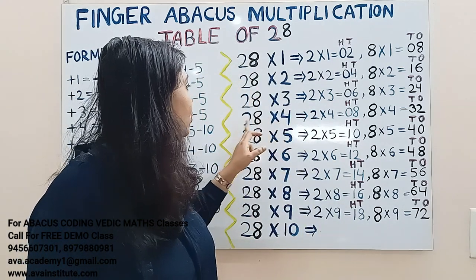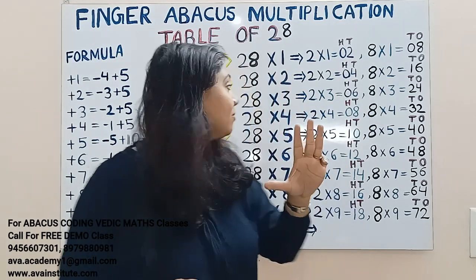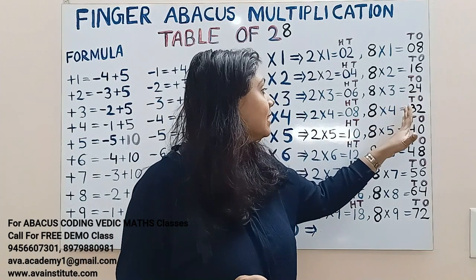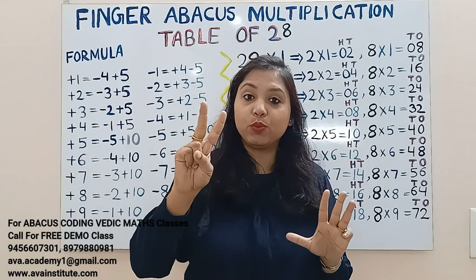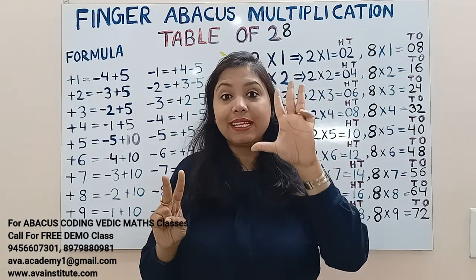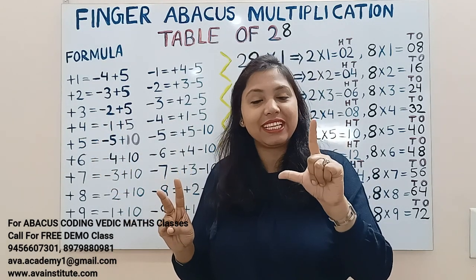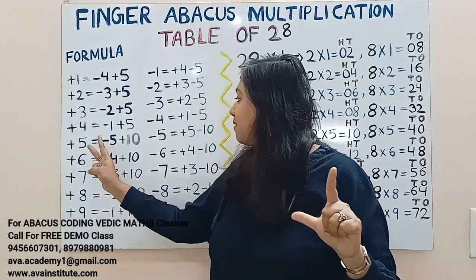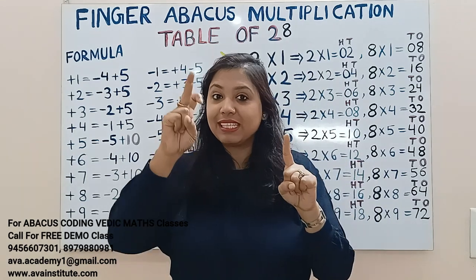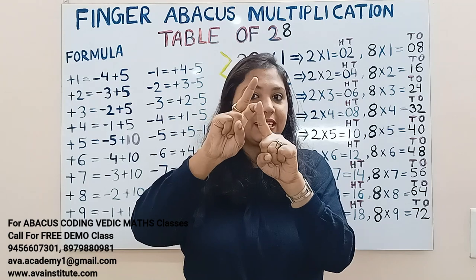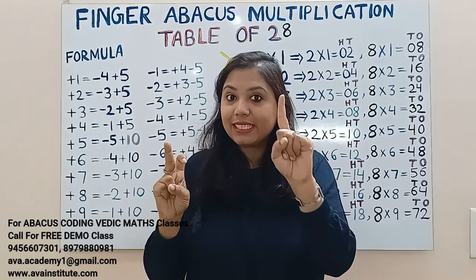Next, 28 fours: 2 fours are 8 — in hundreds: 0, in tens: 8. Now 8 fours are 32 — in tens add 30, in ones add 2. How to add 30: plus 3 formula is minus 2 plus 5, so plus 30 formula is minus 20 plus 50. Plus 50 formula is minus 50 plus 100. So the answer: in hundreds: 1, in tens: 1, in ones: 2. 112 is the answer.